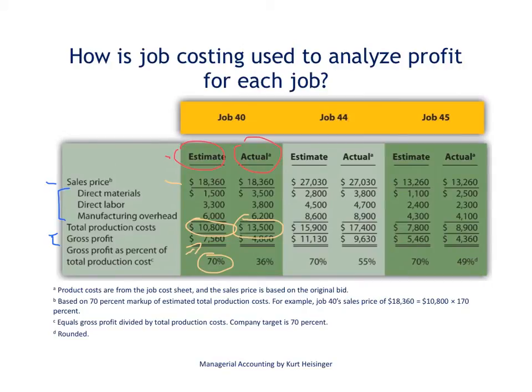You can see very clearly that direct materials is probably the biggest culprit — direct materials were $3,500, while our initial estimate was $1,500, so we were over by $2,000 in that area. Our direct labor was on the high side, as was manufacturing overhead, by $200. Clearly our total production costs of $13,500 were higher than the initially anticipated $10,800.